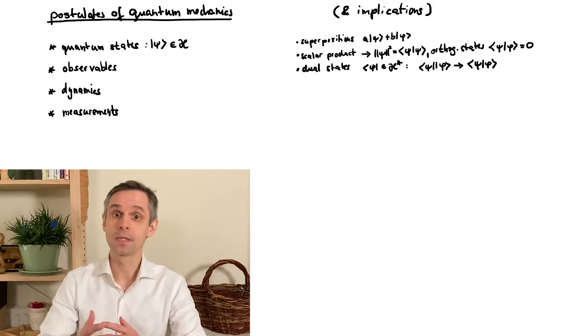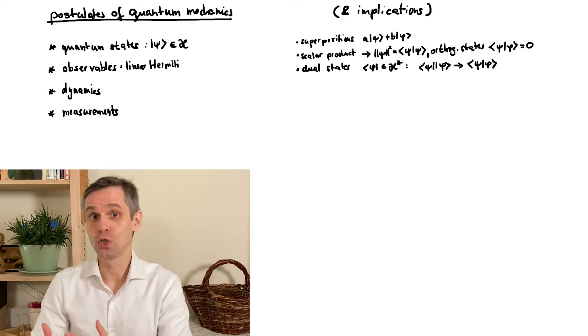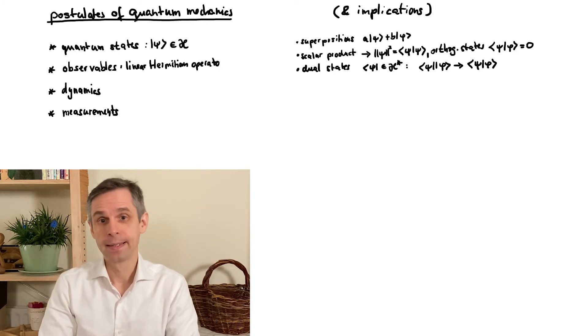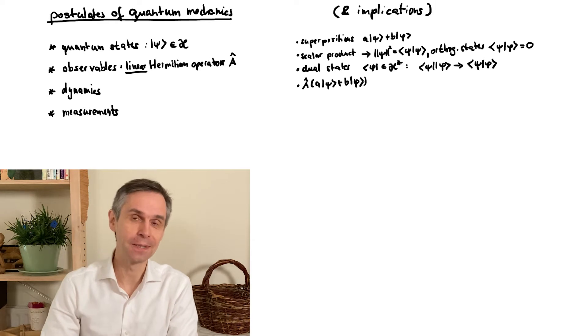Our next postulate concerns the observables. We demand that these are linear Hermitian operators. Linear just means that they will never involve taking, say, the square of a state, or some other function of it. This really isn't defined for these vectors.